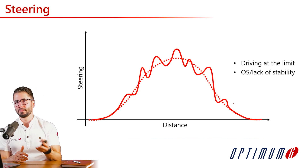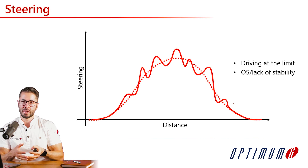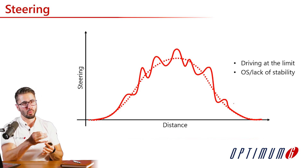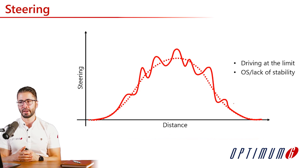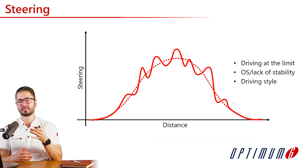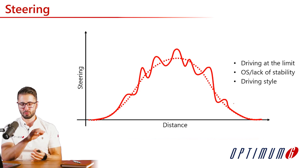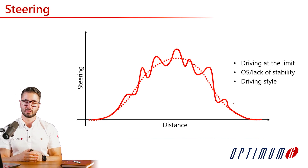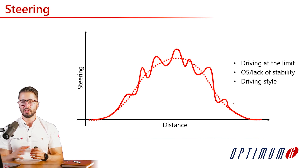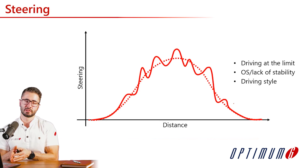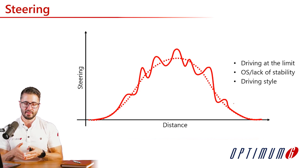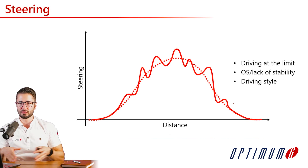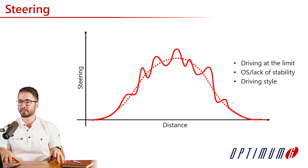The second cause could be that the car is oversteering or unstable — any bumps on the track would make the car go oversteer and the driver needs to correct. Or the third possibility is that it is simply the driving style of the driver. It's important that you understand what is causing this, and that some cars and tires will naturally show a lot more of this compared to others.